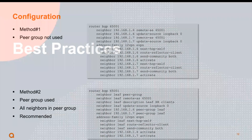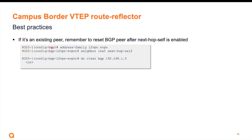Best practices. If it's an existing peer, remember to reset the BGP peer after you configure your next hop self, because if you don't do it, it will not take effect. So once you configure it, clear the session to the neighbor.